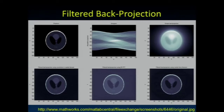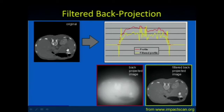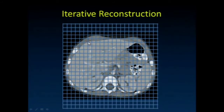You can either filter the projections first and then back project — filtered back projection — or back project first and then filter, though that isn't typically done. Here's a real-world example: an original CT slice, then what a simple back projection of that would look like — you can barely make out the vertebral body and some ribs. Here is the filtered back projection image from that data. Conceptually, it gives you the idea of the difference between simple back projection and filtered back projection.